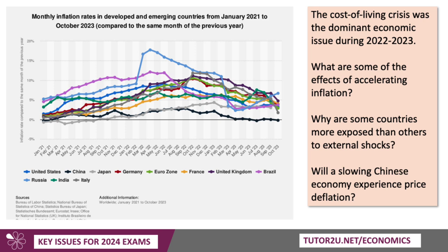Linked with that is the rise in inflation in other countries. The cost of living crisis was clearly the dominant economic issue over the last two years. What are the effects of accelerating inflation? What are the economic and social costs? Why are some countries more exposed than others to external shocks, such as volatile commodity prices? And although most countries are now experiencing disinflation, look at China — the black line at the bottom on the chart. Will a slowing Chinese economy experience price deflation, and what are the risks of deflation to a country such as China?